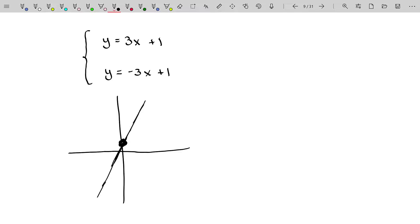And then the second equation is a line with slope -3, again, going through (0, 1). So yay, there is the solution to that system.